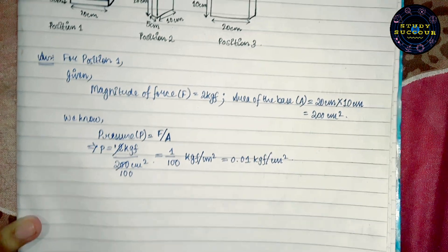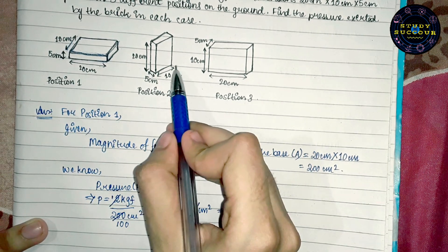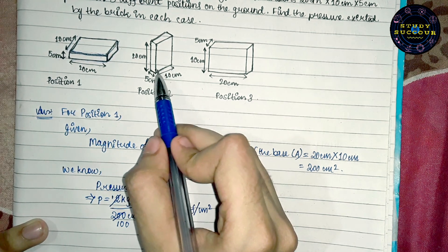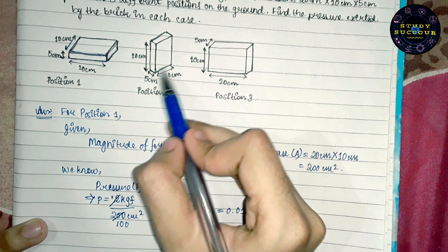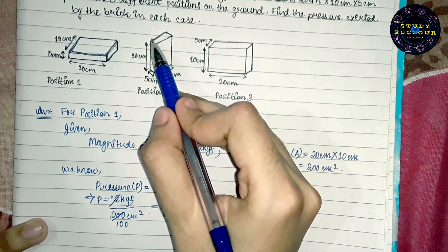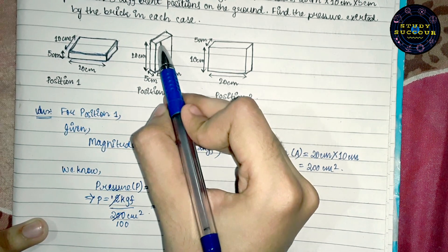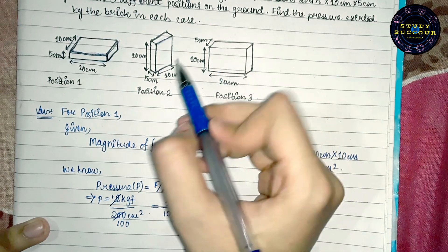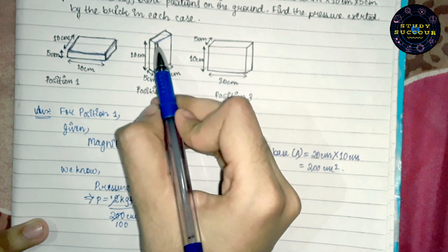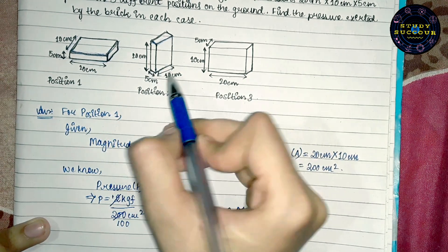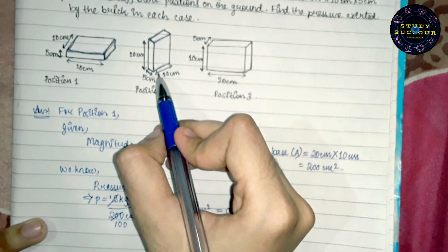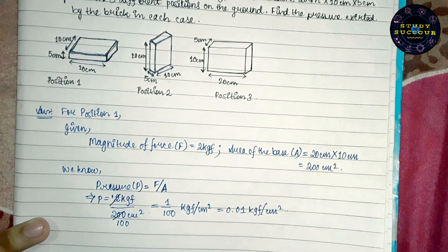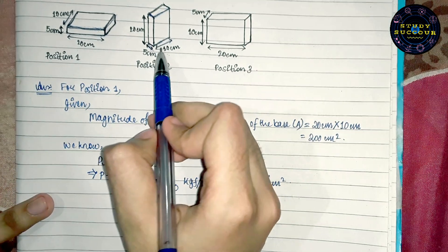Now, let's move to case 2. In case 2, we see that this portion is the base of the block which is exerting the pressure on the ground. Since this is the base, this is the top, both are same. So, the area is also same. From here, we can see that the length of the base is 10 cm and the breadth of the base is 5 cm. So, area of the base will be length into breadth, that is 10 cm x 5 cm. This is for position 2 of the block.